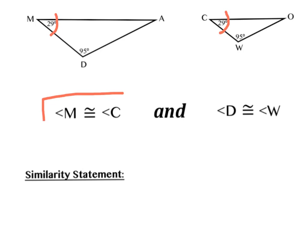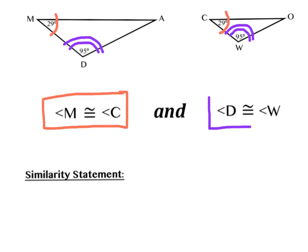I wrote a congruence statement about those two angles. I also see that angle D is 95 degrees, and its corresponding angle in the small triangle, angle W, is also 95 degrees. I have a congruence statement about those two angles as well. Therefore, since the triangles have two pairs of corresponding angles congruent, we know that these triangles are similar.